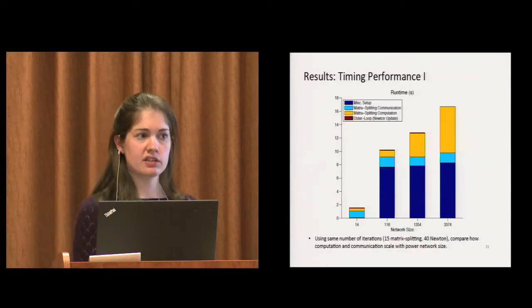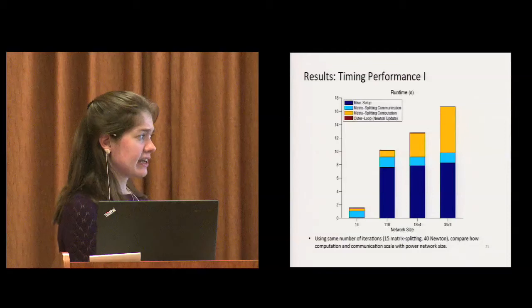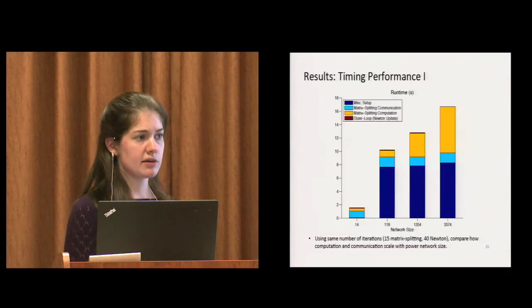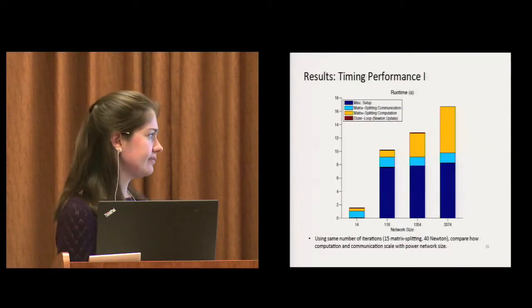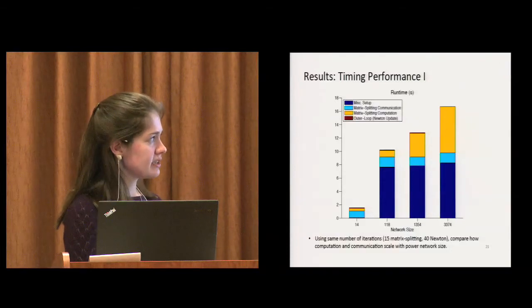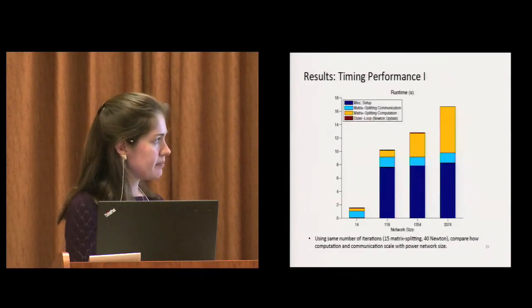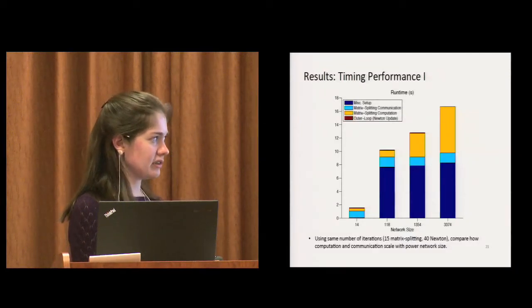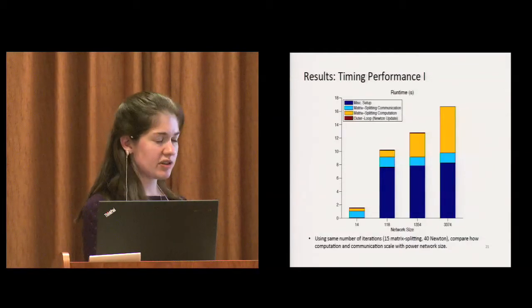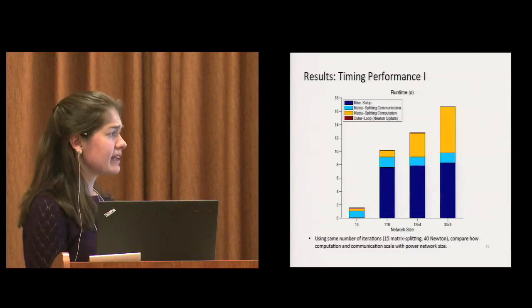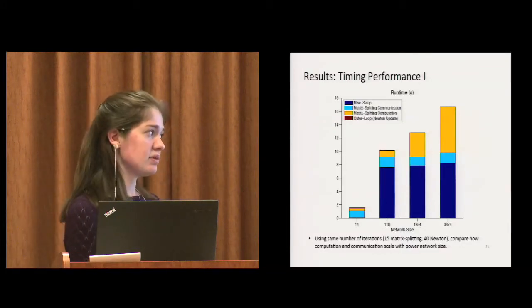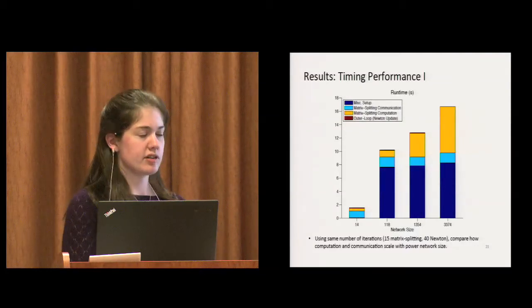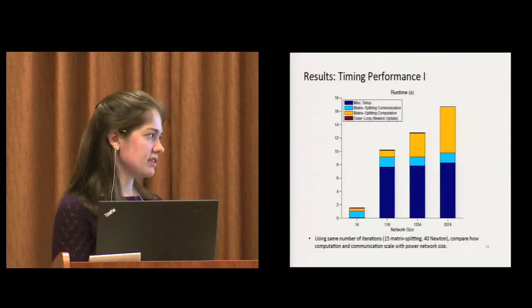The next set of results are related to the timing performance. Again, we fixed the number of iterations. We want to compare how the computation and the communication time scales for different network sizes. In terms of the setup times, here we're running only 14 vertices. It's one node on Blue Waters. When you jump to more than one node, it increases. But then it stays uniform, which is good. We're really happy to see that the communication time is basically staying constant from 14 up to 3,000 vertices. It's the computation that's increasing. So that's what we'll focus on to try and speed this up more.